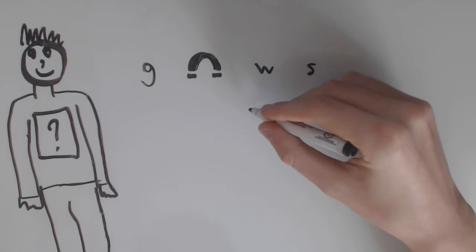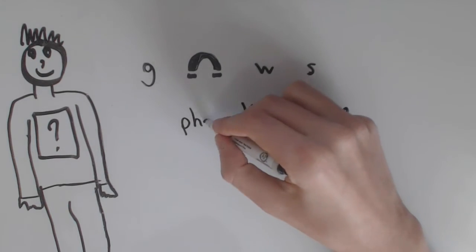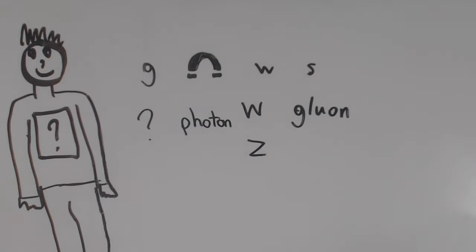The strong force has the gluon, the weak force has the W and Z bosons, the electromagnetic force has the photon, and gravity, on the other hand, doesn't have a particle, or at least it hasn't been discovered yet.